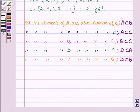And lastly, all the elements of D are again elements of set C. So D is a subset of C.